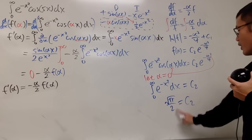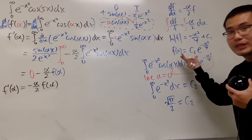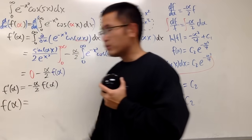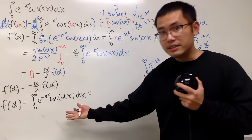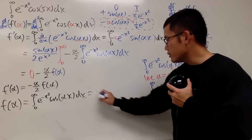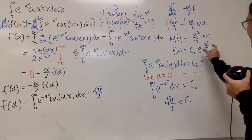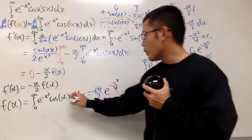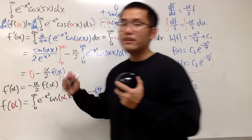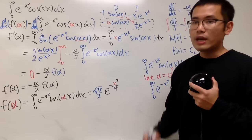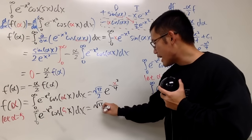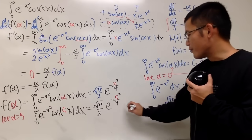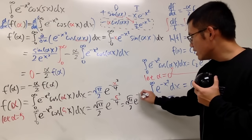So now we can put that back and get our f of alpha. Our f of alpha, which equals our original integral in terms of alpha, is equal to square root of pi over 2 times e to the negative alpha squared over 4. Our original integral is when alpha equals 5, which gives square root of pi over 2 times e to the negative 25 over 4.